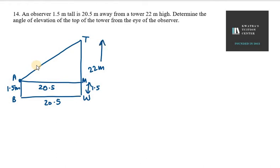So our total height of the tower is 22 meters. But what will be the height of TM? TM will be 22 minus 1.5, so it will be 20.5. The height of TM is 20.5 meters.